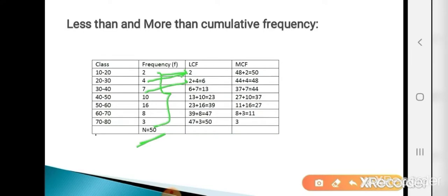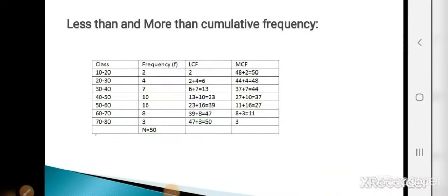The last LCF value equals the total frequency, which is 50. Now calculate MCF (more than cumulative frequency). MCF is opposite to LCF. In LCF, take the first frequency as it is; in MCF, take the last frequency as it is: 3. Then add upward: 3+8=11, 11+16=27, 27+10=37, 37+7=44, 44+4=48, 48+2=50. The last MCF value also equals 50, equal to total frequency.